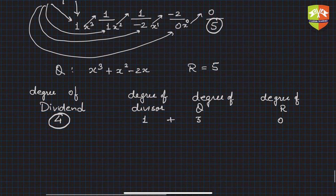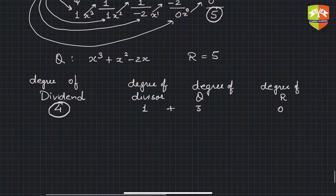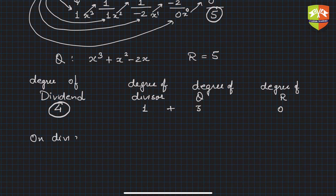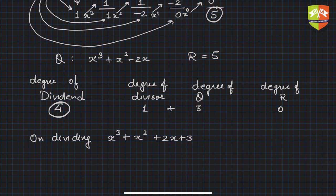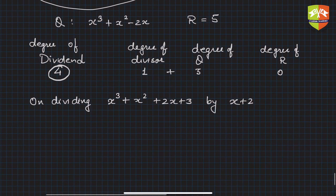This is something interesting — please note it. Let me give you another example. On dividing x³ + x² + 2x + 3 by (x + 2) — I'll work it out quickly using synthetic division.